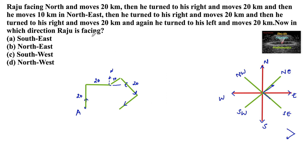Let me recall once again: first 20 km north, then 20 km east, then 10 km north-east, then he turned to his right for 20 km in south-east, then he turned to his right for 20 km in south-west, then he turned to his left and moves 20 km. Now from the south-west direction, moving towards the left side — his right side is here and left side is here — he moves 20 km. Let us mark that as 20 km.